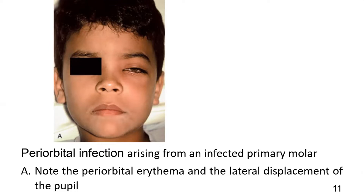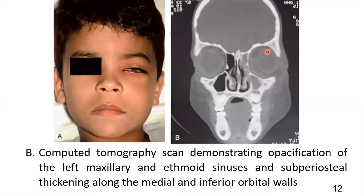Periorbital infection arising from an infected primary molar is seen in this picture. Note the periorbital edema, erythema, and lateral displacement of the pupil. The lateral displacement of the pupil is clearly seen on the CT scan. CT shows opacification of the left maxillary sinus — the right maxillary sinus is normal — as well as opacification of the left ethmoidal sinus, where the right ethmoidal sinus is normal. There is also thickening along the medial and inferior orbital wall, which can be seen on CT.